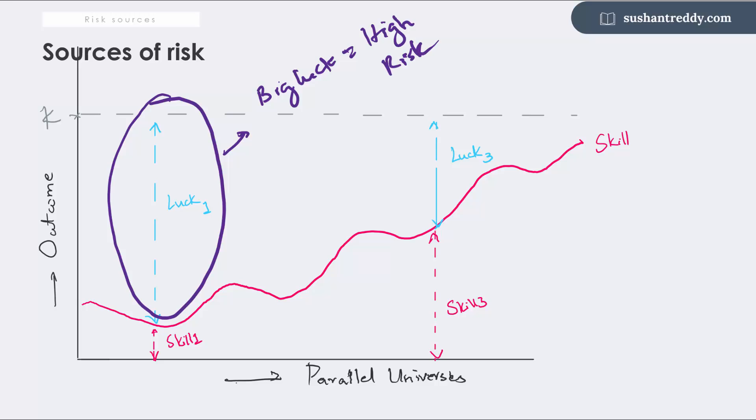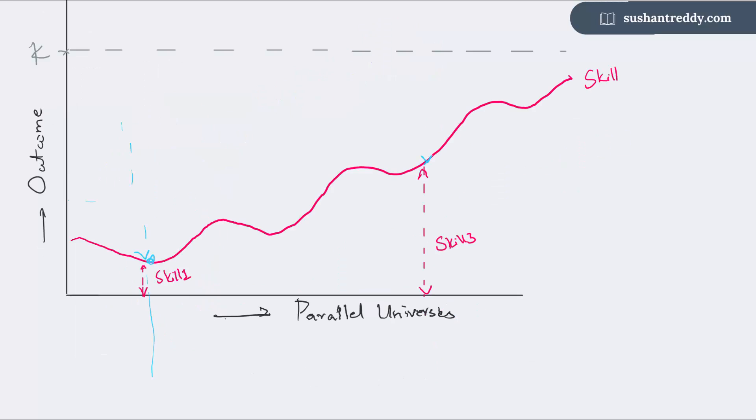Whenever luck has a disproportionate say in outcomes, risk raises its head big time. These charts here are misleading because we are in the world of probability. Nothing in the world of probability is certain. What we call as luck in this chart is actually a probability distribution that can cause outcomes to go on either side.